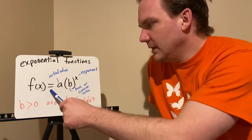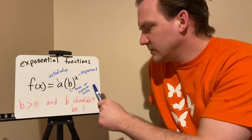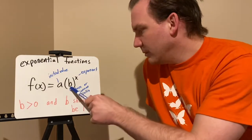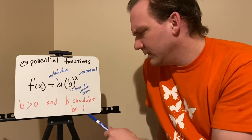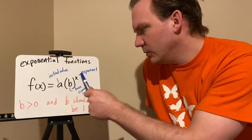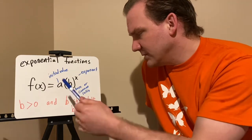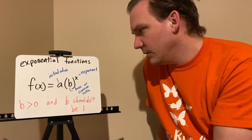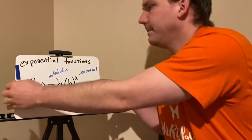We generally write it as f(x) = a, which is your initial value, times a base b — the common ratio we're going to be multiplying by — raised to an exponent. b is always going to be greater than 0, and it really shouldn't be 1, because if b is 1, you just stay with your initial value the whole time. 1 to any exponent is always 1, so you're just multiplying a by 1 — you get a straight horizontal line.